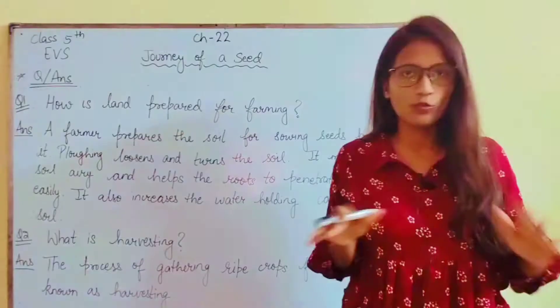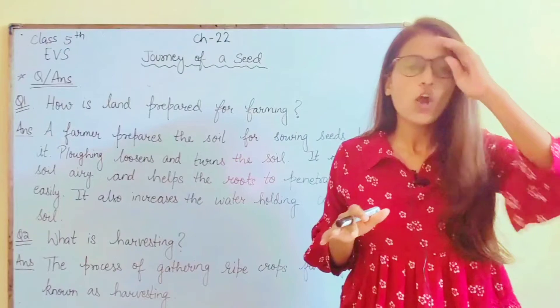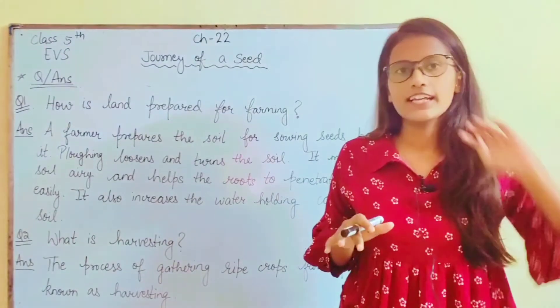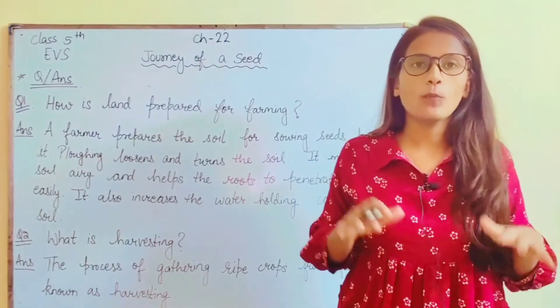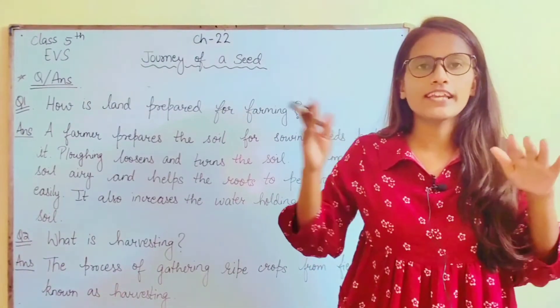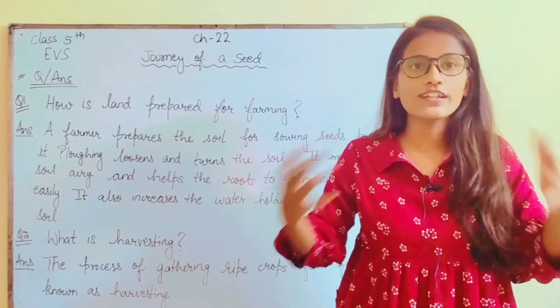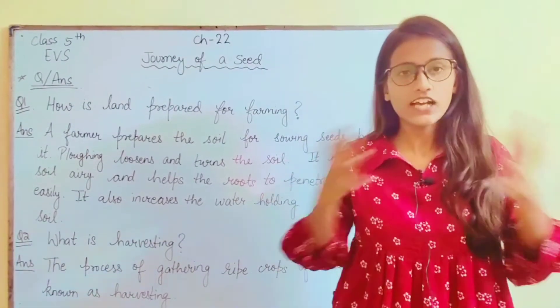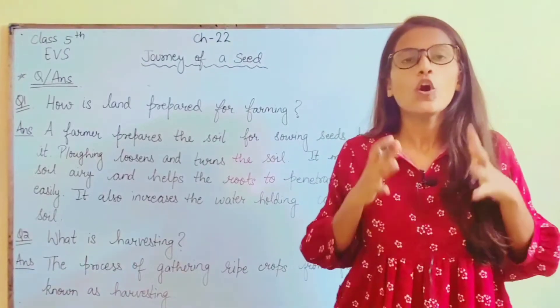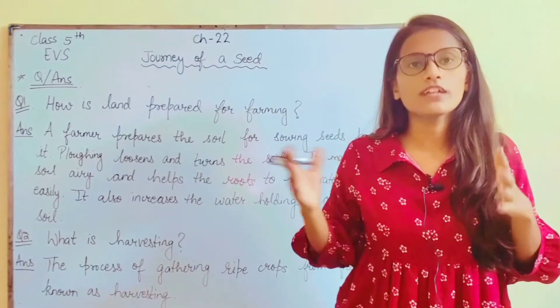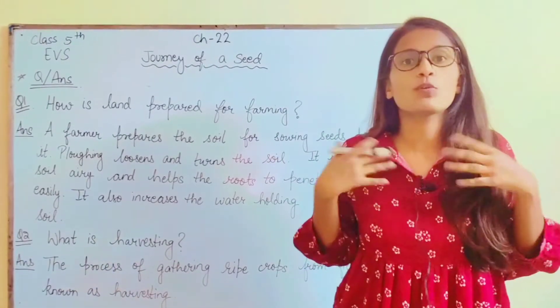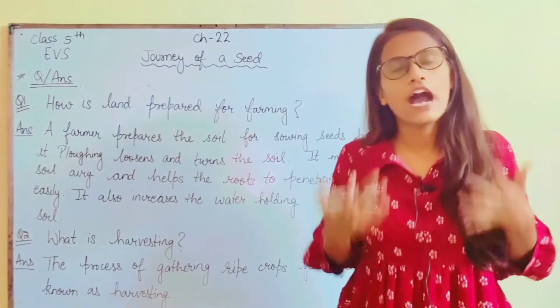Woh crop which grown ho gai hai. We have to cut that crop and gather it. That process of cutting and gathering is known as harvesting.